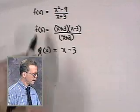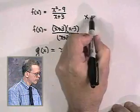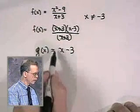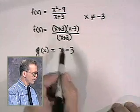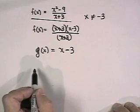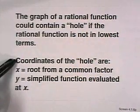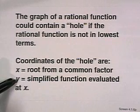The problem comes in comparing f and g. We know by looking at f that x cannot equal negative 3, which might lead us to think there was a vertical asymptote. But when we simplify the equation, we find that there is no restriction. When a function is not in lowest terms, we say there is a hole at that point. The coordinates of the hole are x equals the root from the common factor and y equals the simplified function evaluated at x.